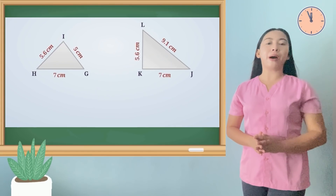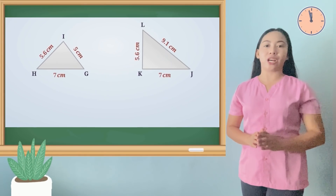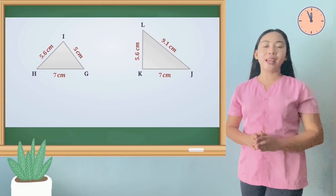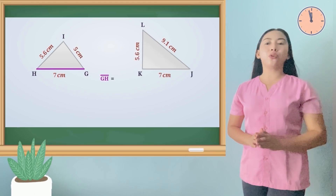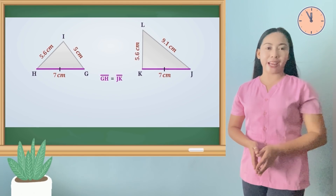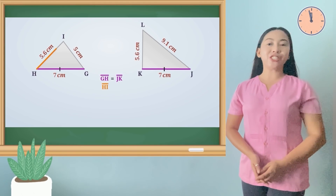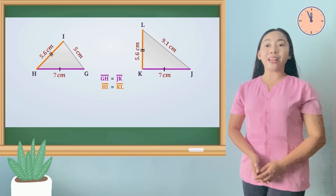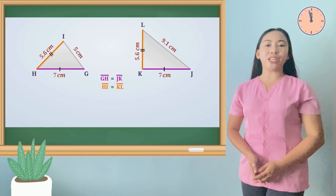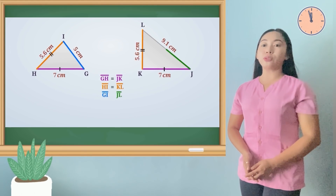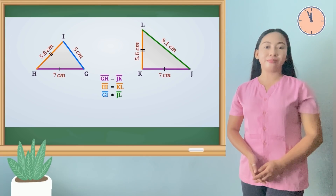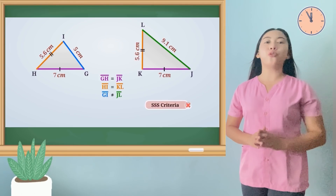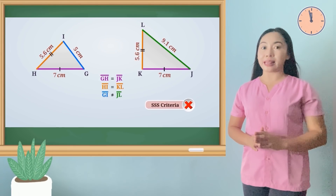Now let's talk about triangle GHI and triangle JKL. Side GH is equal to side JK, and side HI is equal to side KL. But side GI is not equal to side JL. Hence, the SSS or side-side-side congruence postulate is not applied.